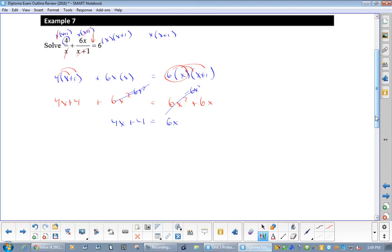Okay, why don't I get all my x's on the right side of this? So I'm going to minus 4x. So 4 equals negative 2x divided by negative 2. Negative 2 equals x.